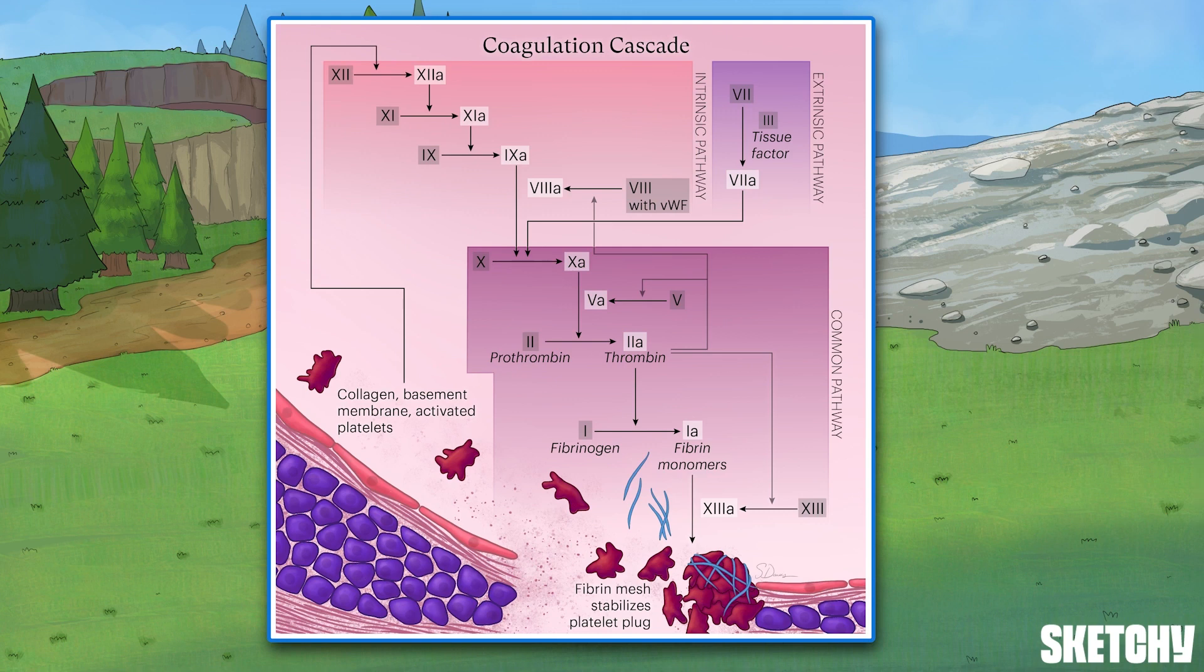Forming a clot involves a lot of intermediate steps and a bunch of coagulation factors. These factors start life as inactive plasma proteins that are converted or activated into enzymes, which then catalyze subsequent enzymes in the cascade—a kind of chain reaction.